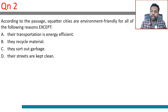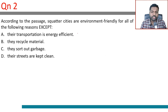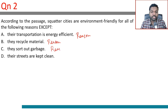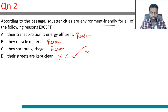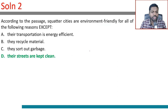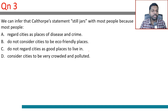Question 2: Squatter cities are environmentally friendly for all of the following reasons except — find all valid reasons and identify the odd one out. Transportation is energy efficient — valid. They recycle material — valid. They sort out garbage — valid. Their streets are kept clean — this is not stated and not a reason for being environmentally friendly. The answer is D: their streets are kept clean.